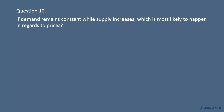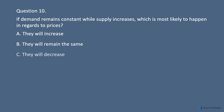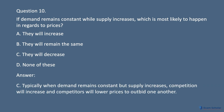Question 10. If demand remains constant while supply increases, which is most likely to happen in regards to prices? A. They will increase. B. They will remain the same. C. They will decrease. D. None of these. Answer: C. Typically when demand remains constant but supply increases, competition will increase and competitors will lower prices to outbid one another.